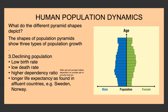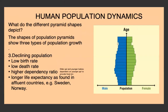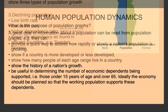In a declining population, people often have a longer life expectancy. This is found in more developed countries like Sweden and Norway. Population graphs can provide a quick way to assess how rapidly or slowly a nation's population is growing — whether declining, increasing, or stable.